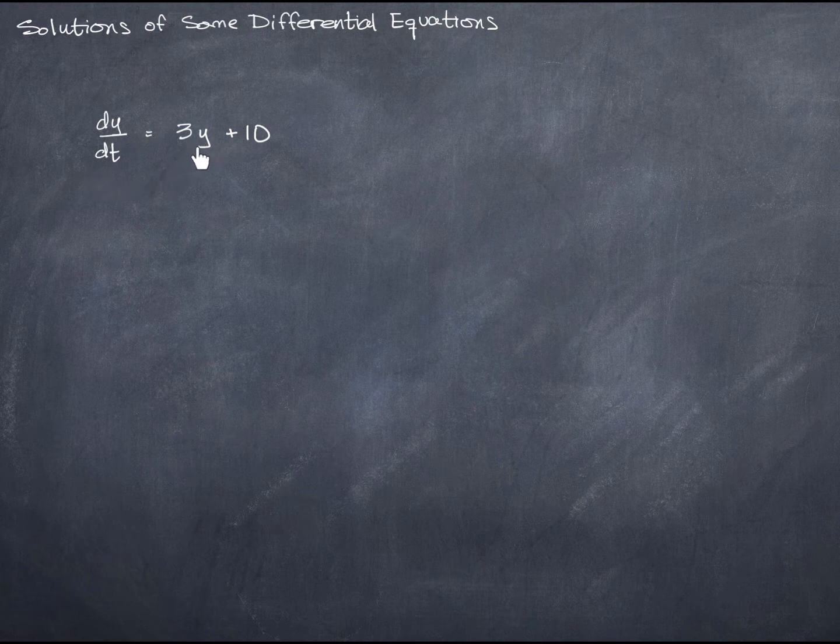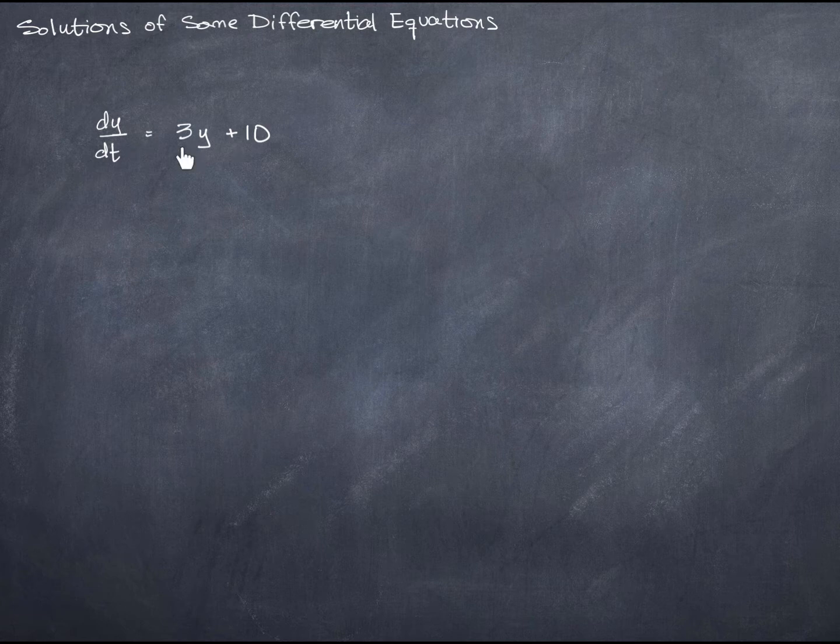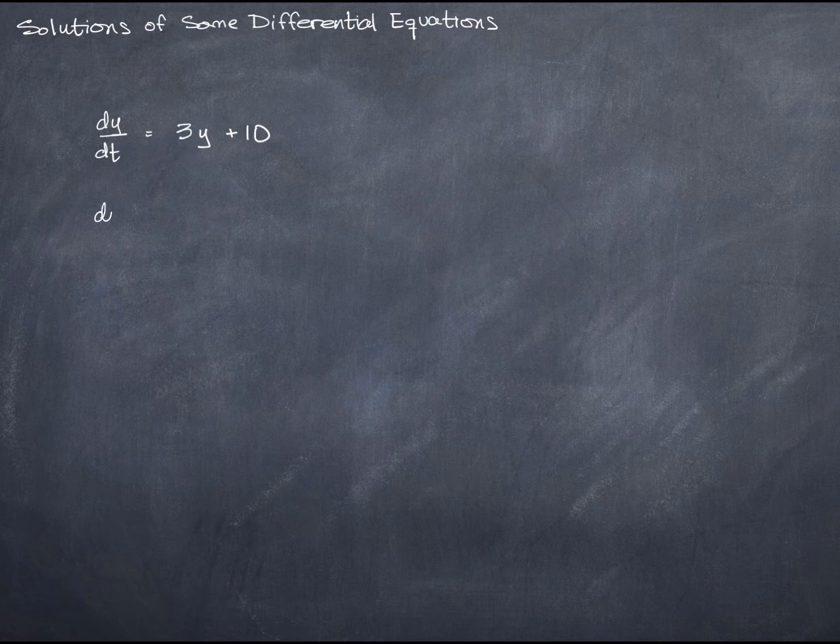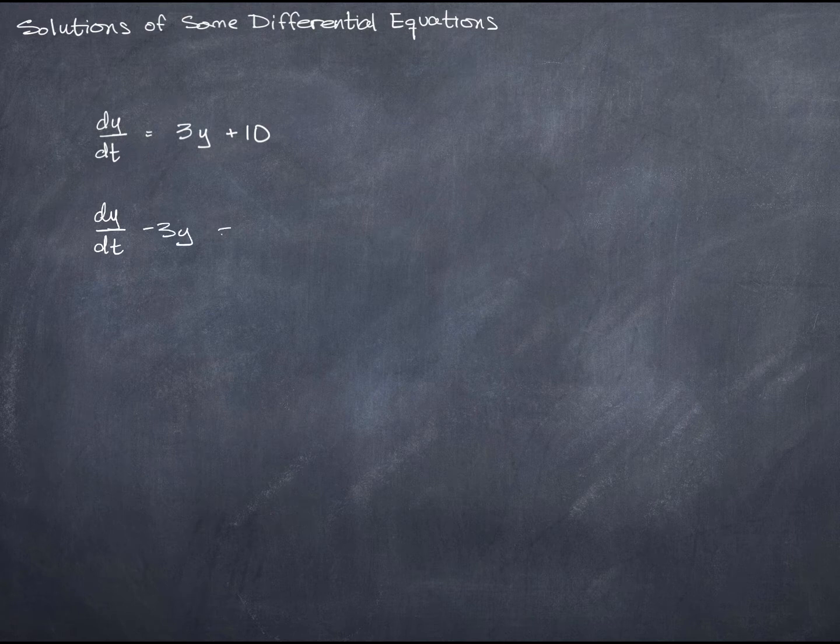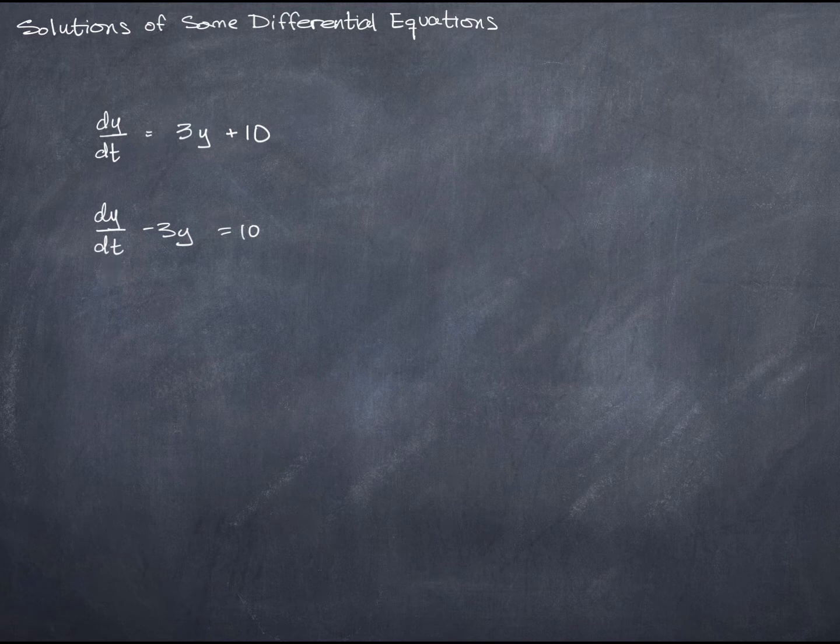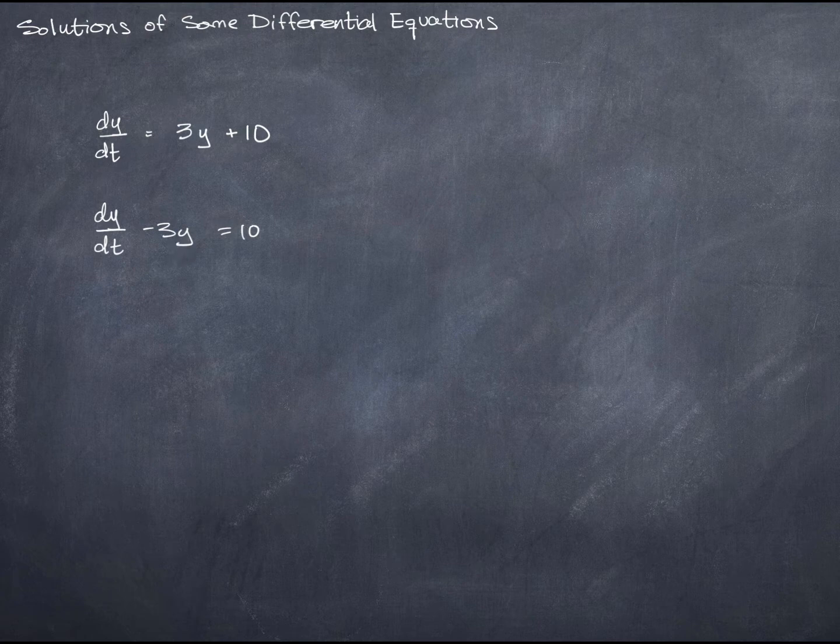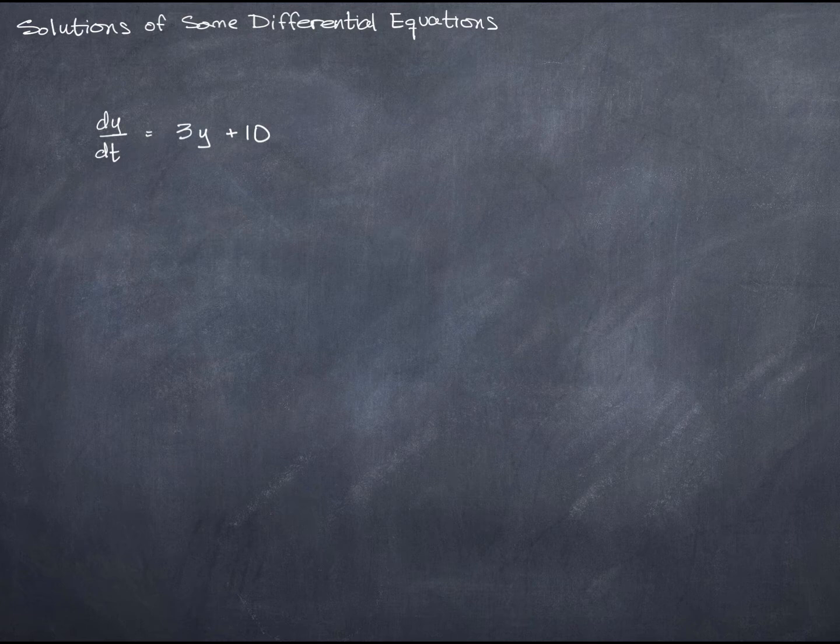The problem with that is if we just move the 3y, we'll have to subtract it first of all. So that would leave us with dy/dt minus 3y equals 10. And then when I move the dt by multiplying it by both sides, I'd have to multiply this term by it as well. And that actually introduces a dt. So we kind of have to think a little bit more creatively. What I'm going to do here is I'm going to take the whole right-hand side and divide by that.